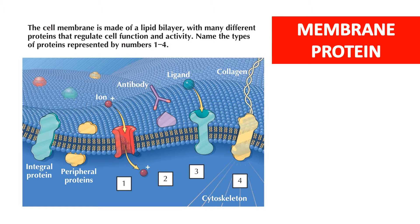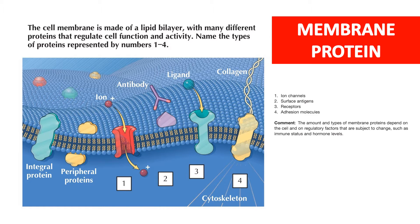The first question: the cell membrane is made of a lipid bilayer with many different proteins that regulate cell function and activity. Name the type of protein represented by numbers 1 to 4 on the diagram. Number 1 is an ion channel, number 2 is a surface antigen protein, number 3 is a receptor, and number 4 is an adhesion molecule. The amount and type of membrane protein depend on the cell and on regulatory factors subject to change, such as immune status and hormonal levels.